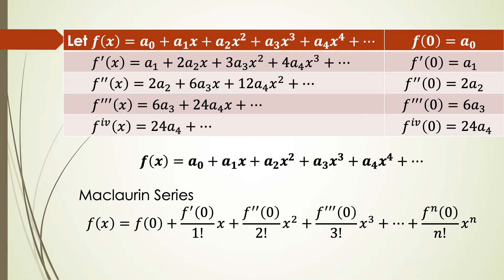So we get 2a2 plus 6a3x plus 12a4x² and so on. When x equal to 0, our second derivative f'' equal to 2a2.